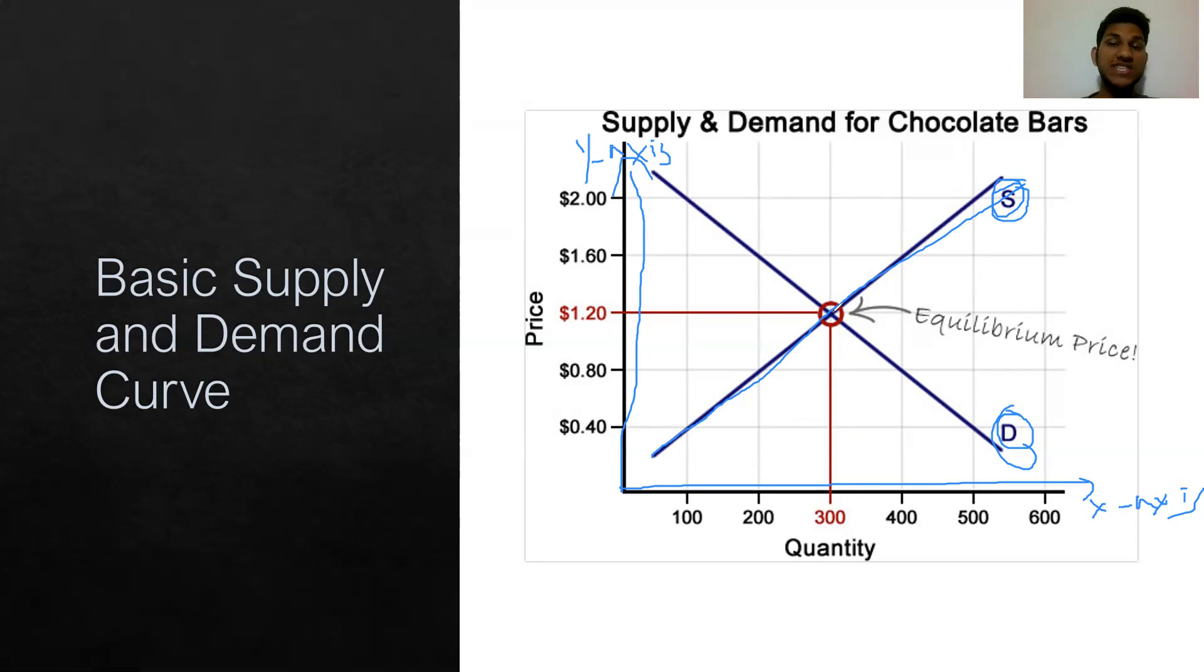The line at which supply and demand intersects, where we see that the amount that is supplied is equal to the amount that is being demanded, is what we call the equilibrium price. The equilibrium price here is $1.20, and the equilibrium quantity is 300.